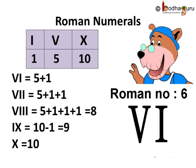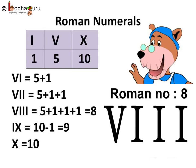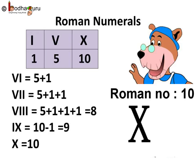5 is represented by numeral capital V. 6 is 5 plus 1, that is V followed by I. 7 is 5 plus 1 plus 1, hence V followed by 2 I's. 8 is 5 plus 1 plus 1 plus 1, which is V followed by 3 I's. 9 is equal to 10 minus 1, hence I before X. And 10 is X.